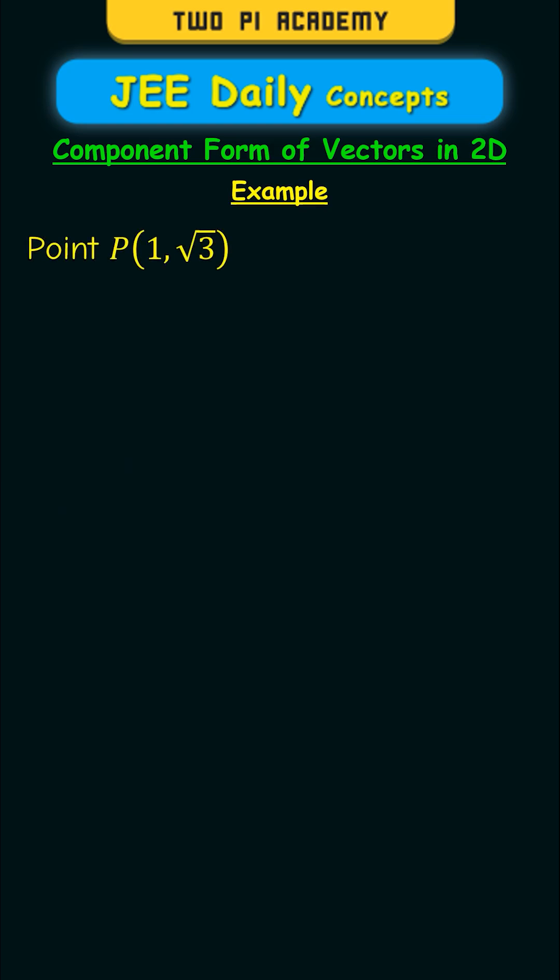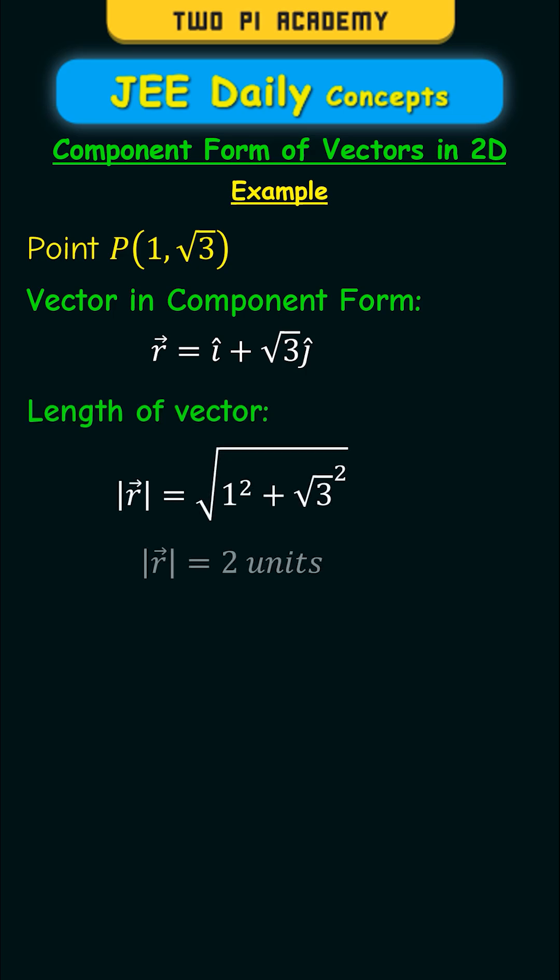So for example, if you consider a point P at (1, √3), then vector r is equal to i-cap plus √3 j-cap. The modulus of vector r is 2 units, and finally theta is given by 60 degrees.